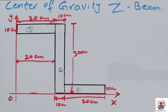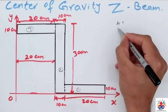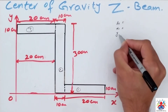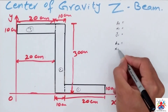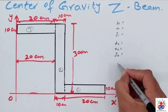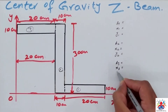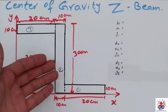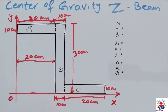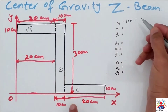We have three steps to follow as usual. First, we will calculate area A1, x1, and y1. Similarly, area A2, x2, y2, then area A3, x3, y3. As you can see, these are all rectangles, and the formula for a rectangle is base multiplied by depth.